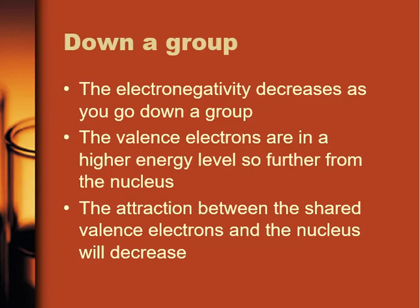As we go down a group — from fluorine to chlorine to bromine to iodine — the number of protons in the nucleus is increasing significantly, from nine for fluorine to 17 for chlorine to 35 for bromine. But we're also adding extra shells of electrons, going from the second p-orbital to the third, the 4p, to the 5p, getting further and further from the nucleus. So the attraction between the valence electrons and the nucleus decreases, and electronegativity decreases. It's an inverse relationship with atomic radius — as the atomic radius gets smaller, electronegativity gets higher.